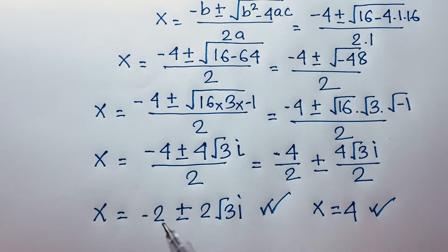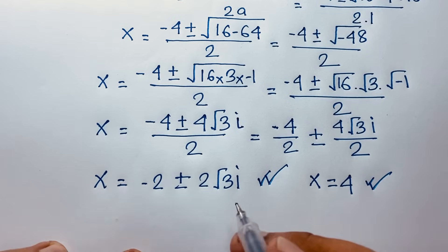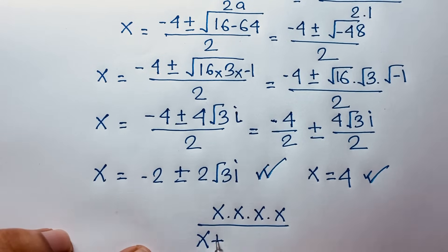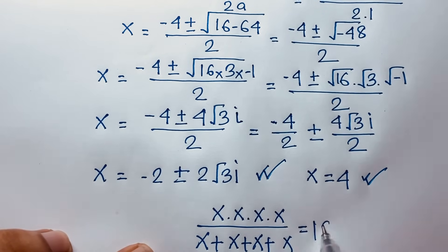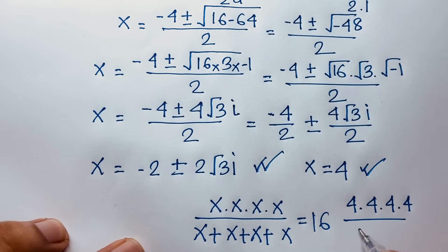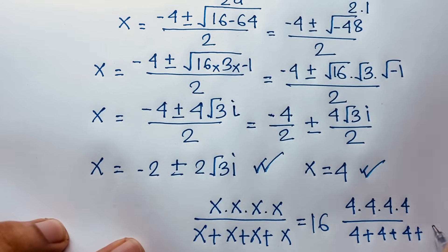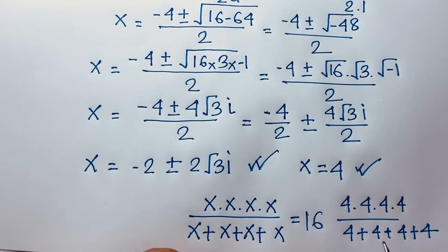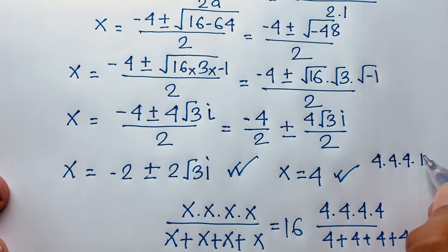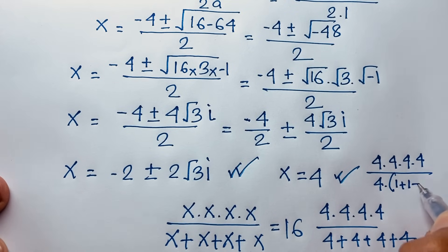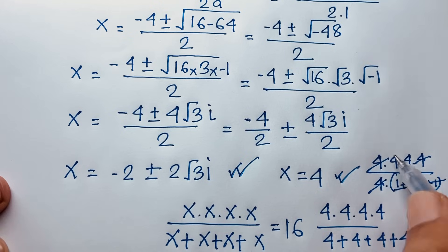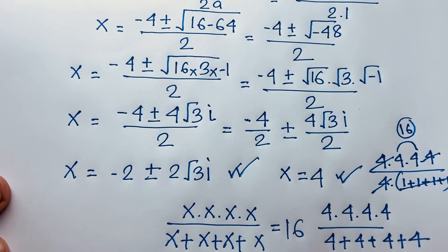This is our final answer to the math Olympiad question. This is our real solution and these are our complex solutions. Our original equation is x times x times x times x over x plus x plus x plus x equals 16. With our real solution x equals 4: 4 times 4 times 4 times 4 over 4 plus 4 plus 4 plus 4 — factoring out 4 gives 4 to the power 4 over 4 times 4, which equals 4 squared equals 16. Left-hand side equals right-hand side, confirming x equals 4.